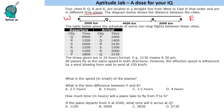The times given are in 24-hour format. For example, 21:30 means 9:30 PM. If the value is less than 12, it is AM. For instance, 1600 means 4:00 PM.